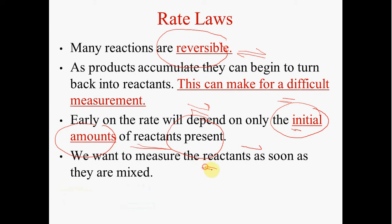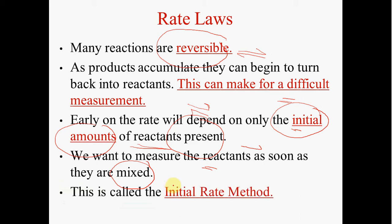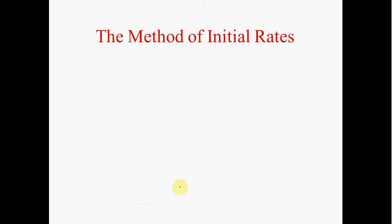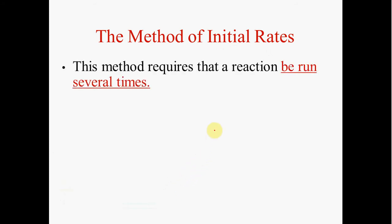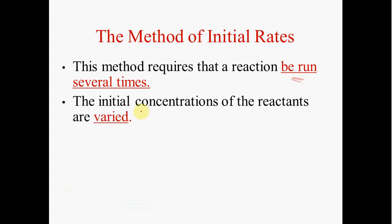We measure our reactants as soon as they're mixed in order to catch them before any products are formed. This is called the initial rate method for determining a rate law. To use this method, we run a reaction several times, varying the initial concentrations of reactants. By holding some reactants constant while varying others, we can see the effect each reactant has on the rate.